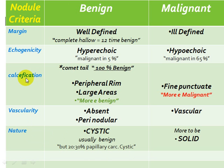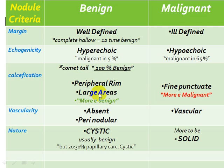About C — Calcification: there is a sign that when I see it, this means the lesion is 100% benign — it is the comet tail sign. When I see a comet tail sign, this means the lesion is 100% benign. Other types of benign calcification include peripheral rim calcification and large areas of calcification. Fine punctate calcification is more associated with malignant lesions.